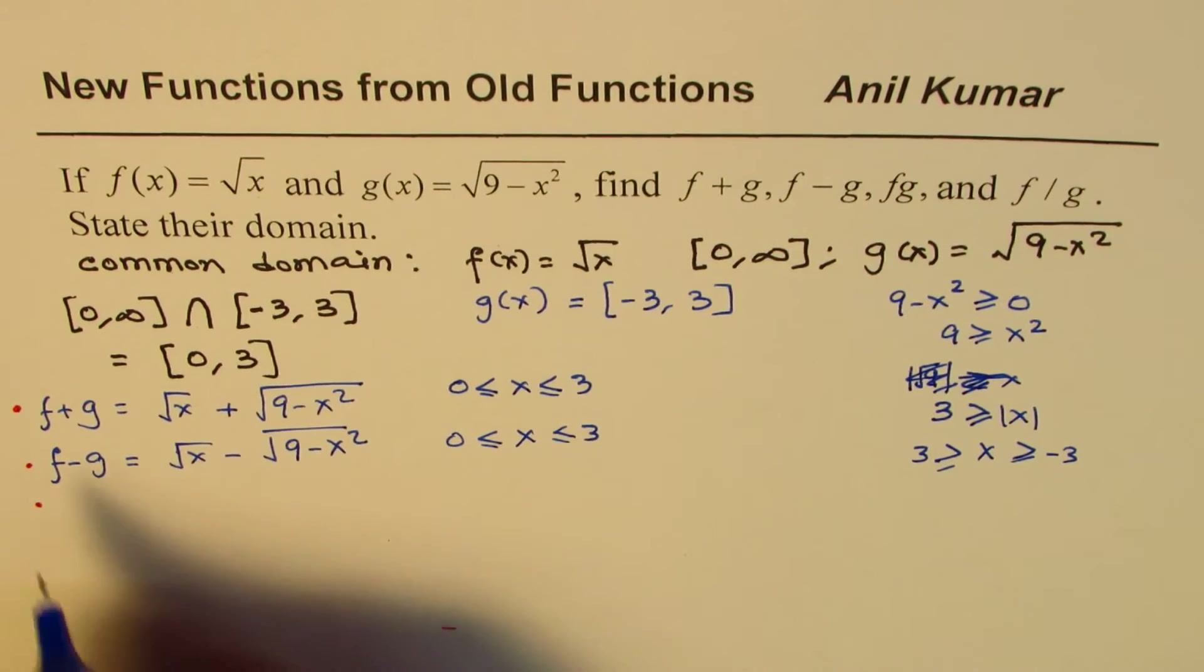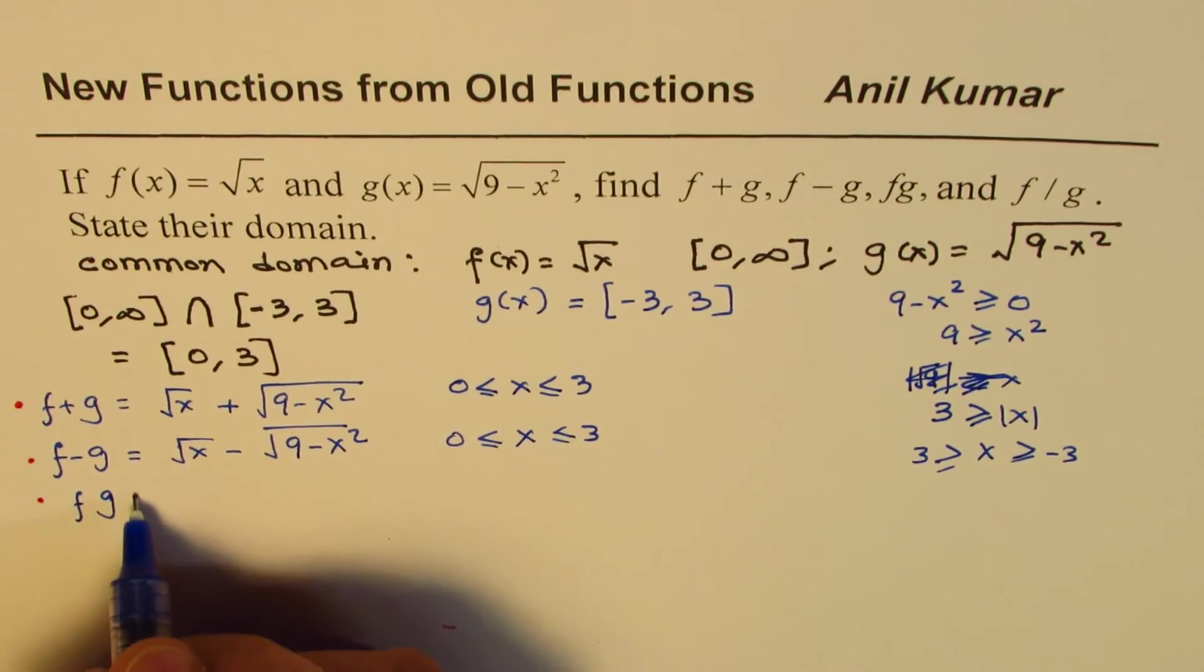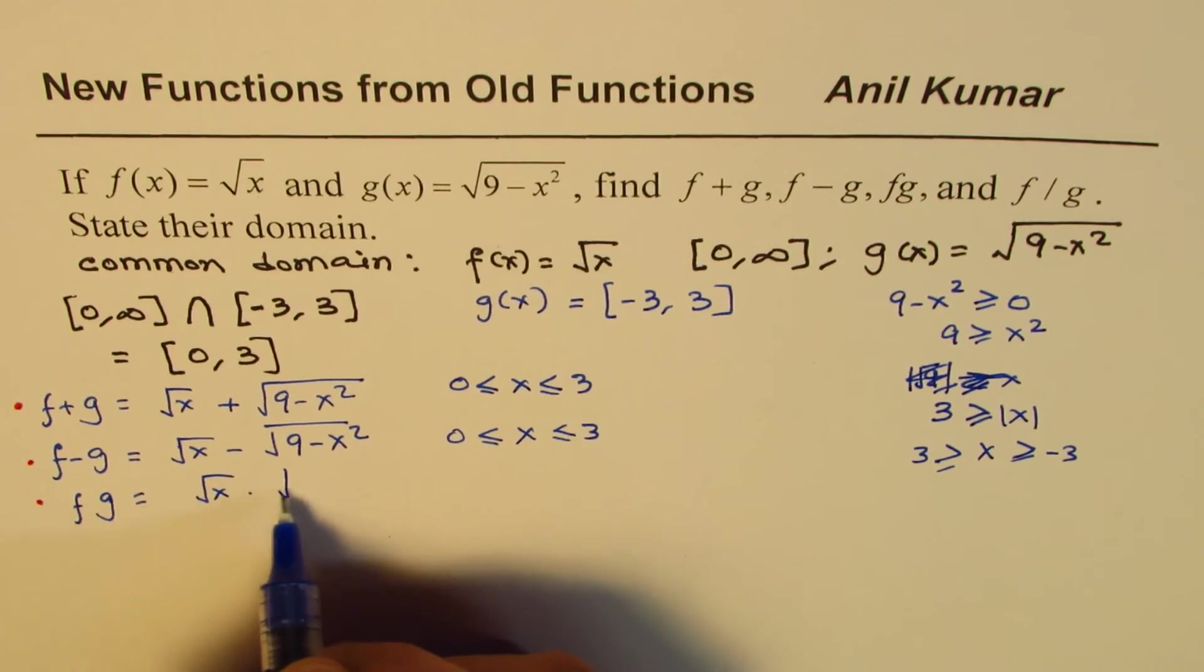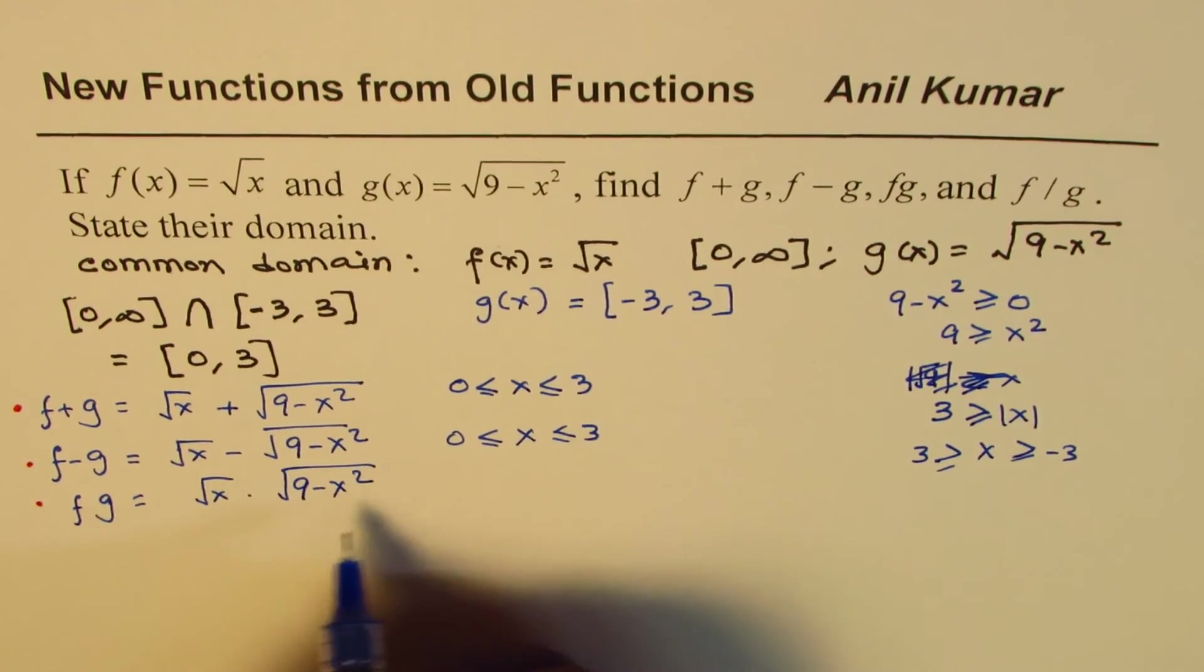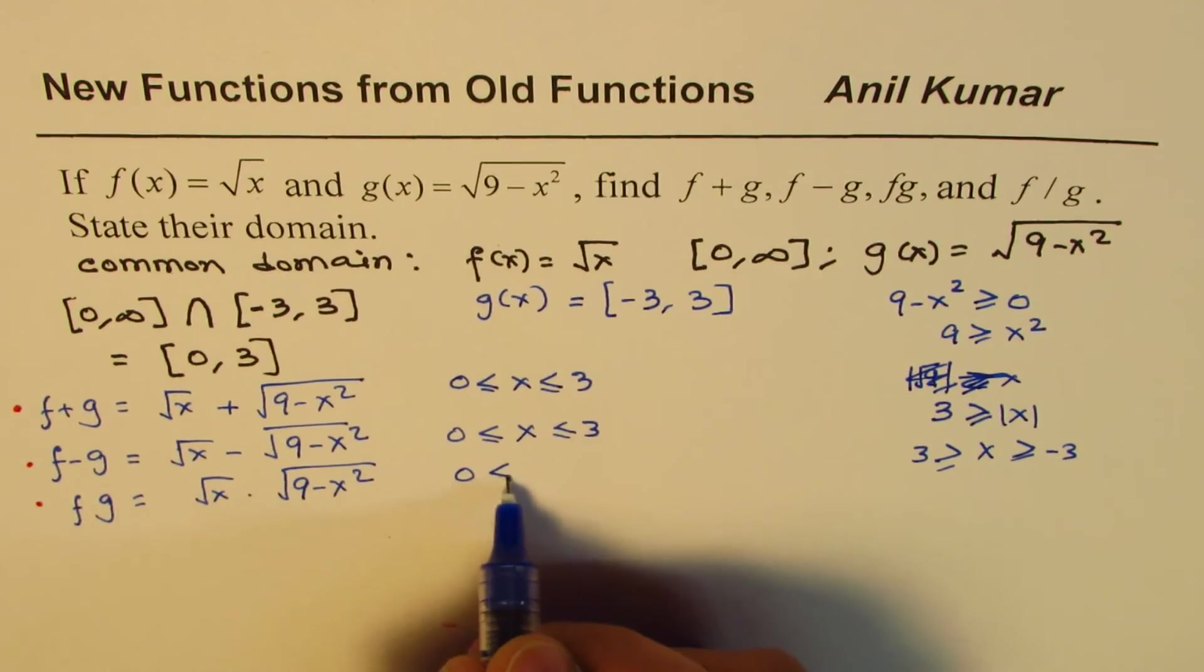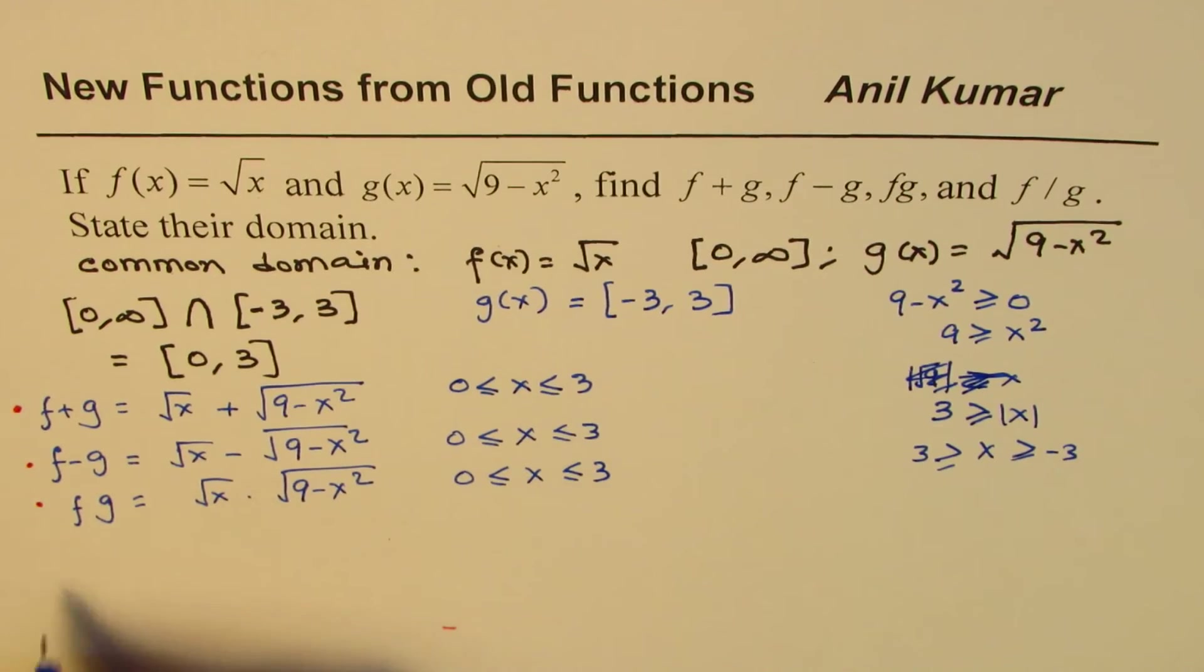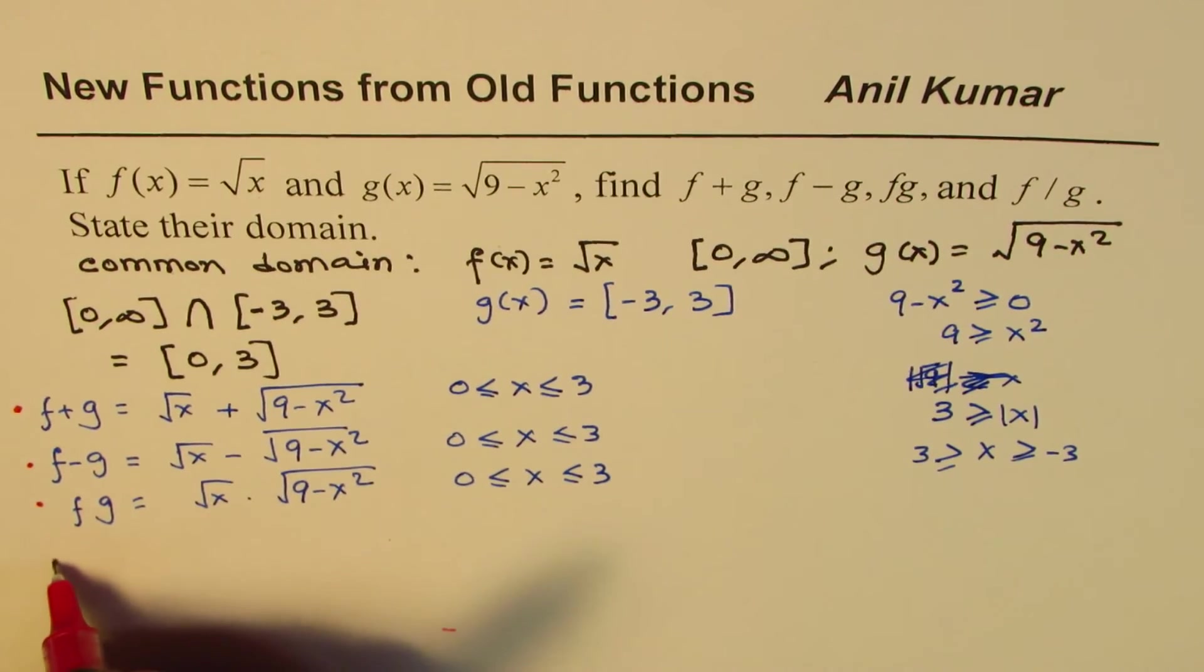So f and g product will be square root of x times square root of 9 minus x squared, and this also the domain will be from 0 to 3. However, the last one is the domain.